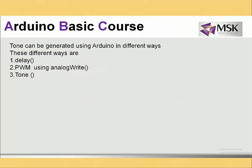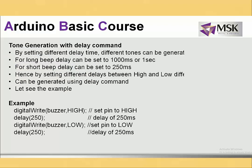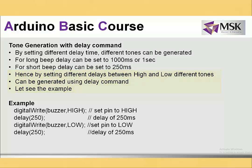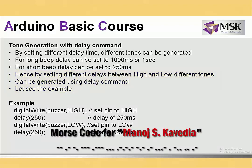Tone generation with Arduino and a buzzer can be done in three different ways: by writing delay, by using a PWM signal, or by using a tone function. Using delay means the Arduino pin remains in the same state during that span. By setting different delay times — 1000ms, 500ms, 250ms — the tone can be a short beep, long beep, or moderate beep. A nice example is generating Morse codes, which are combinations of short, long, and moderate beeps.